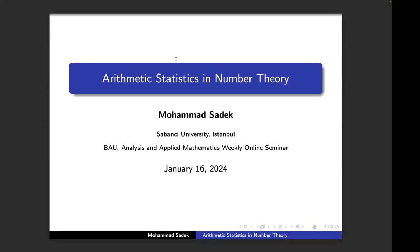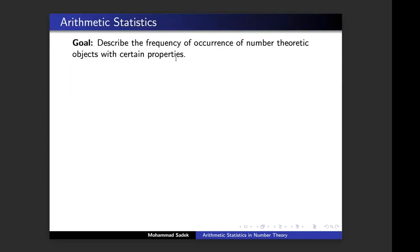Today I chose to talk about arithmetic statistics in number theory, which is a pretty much trendy approach now in number theory. Before saying anything, I have to spend a few words telling you what arithmetic statistics really is. When a number theorist says arithmetic statistics, what he or she usually means is: I have a set of number-theoretic objects with certain properties and we want to count these objects, describe the frequency of occurrence. Although it's trendy nowadays, the approach itself is very classical.